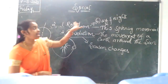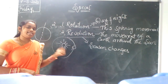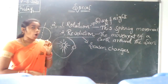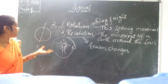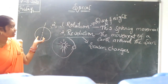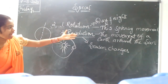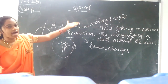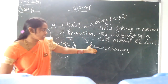Rotation causes the formation of day and night. Revolution causes seasonal changes. The Earth has two movements. The first is rotation — rotation means the movement of the Earth on its own axis. The second is revolution — revolution means the movement of the Earth around the sun. Rotation causes formation of day and night, and revolution causes seasonal changes.